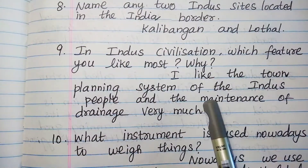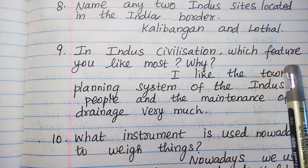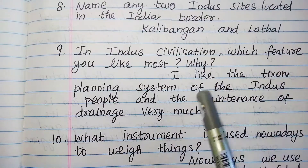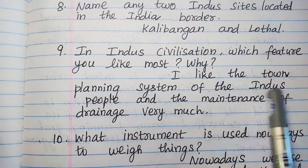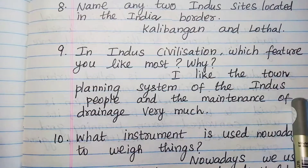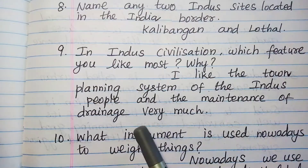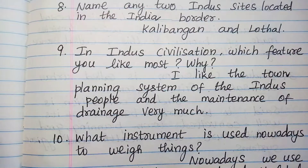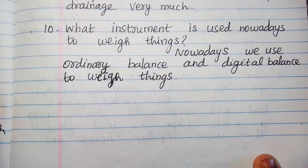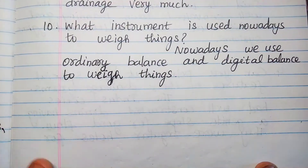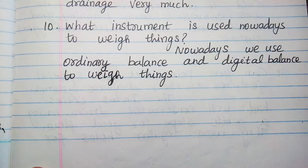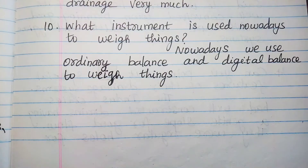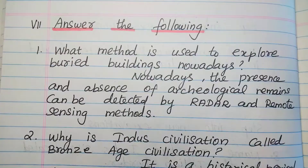Question 9: Which feature of the Indus civilization do you like most and why? I like the town planning system of the Indus people and the maintenance of drainage very much. Question 10: What instrument is used nowadays to weigh things? Nowadays, we use ordinary balance and digital balance to weigh things.